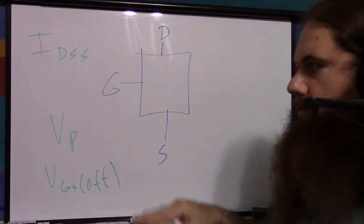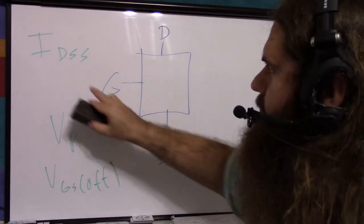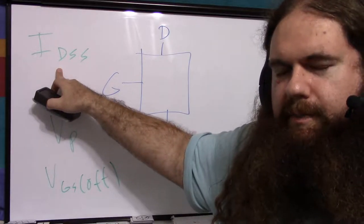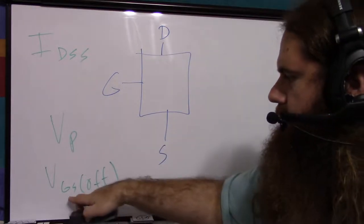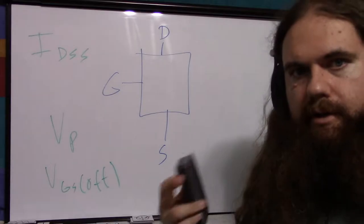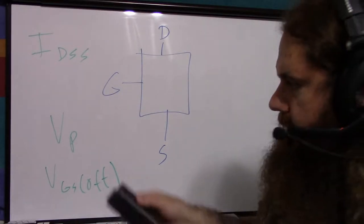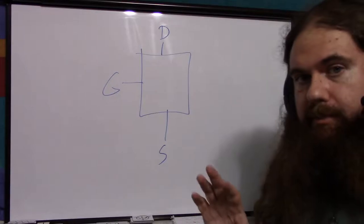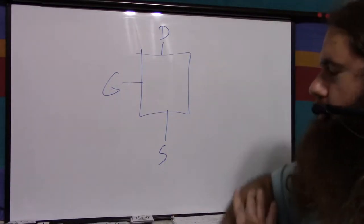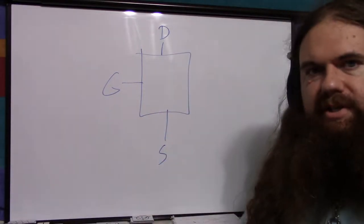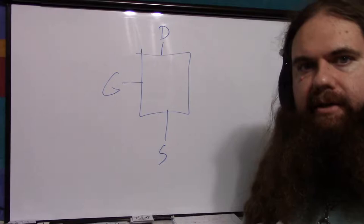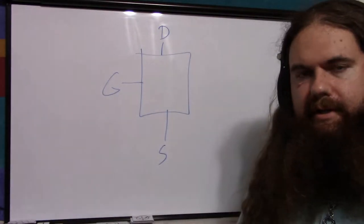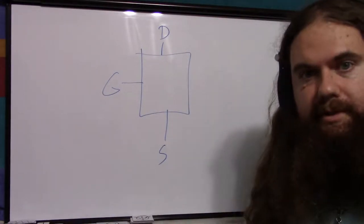Drain-to-source saturated current — look at your spec sheet or measure it. The pinch voltage or VGS-off voltage — look in your spec sheet or measure it. That's all you need to know: one current and one voltage. There's actually surprisingly little math here. Most of what I'm doing is just explaining things in excruciating detail. Four pages and I've only got a couple of equations on here, and very short ones too.